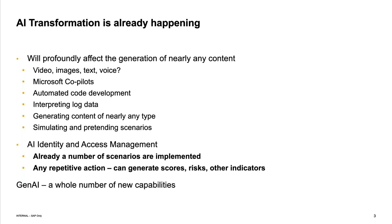Today we're focused on access governance, which is about governing access to your applications. At SAP, we think of it in about five different modules: access risk analysis, role management, access certification, access request and user provisioning, and privileged access management. That's what our access governance solutions consist of.